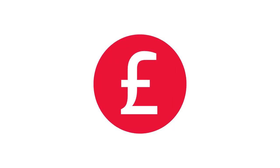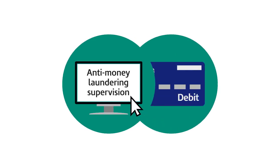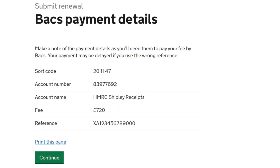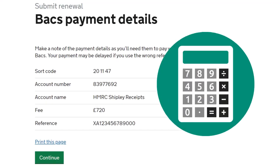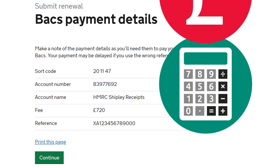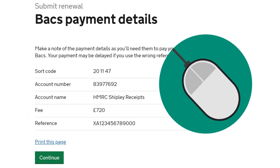You'll need to pay your fees when you first apply to register for anti-money laundering supervision and when your annual supervision payment is due. When you give details of your business, the online service will work out how much you owe for each type of fee, and you can pay the total online.